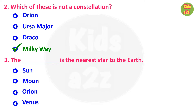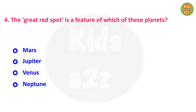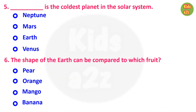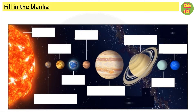Answer to question 3 is Sun. Question number four: the Great Red Spot is a feature of which of these planets? Answer is Jupiter. Question 5: dash is the coldest planet in the solar system. Answer is Neptune. Question number six: the shape of the Earth can be compared to which fruit? Answer is orange.